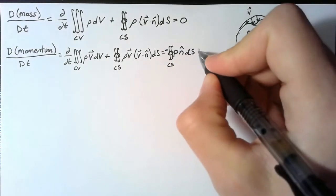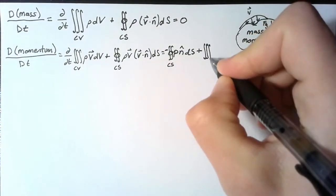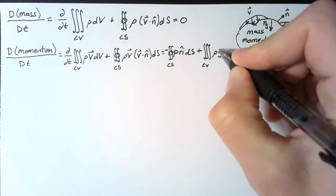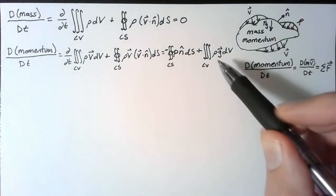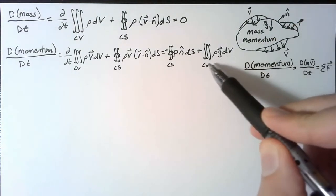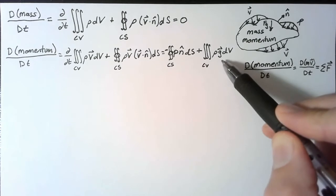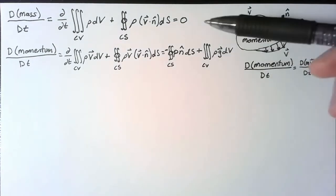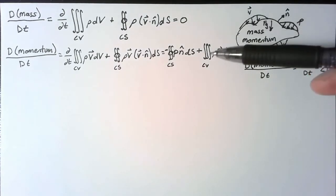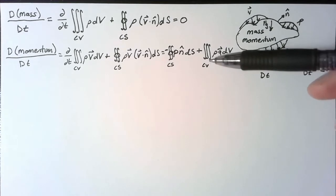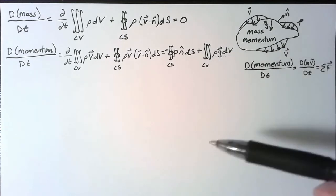And then we need to multiply this by an area, so we have a ds. The force of gravity is just the integral over the entire volume of rho times g dv. But in this case g is constant, so this is really just mass times g. So now we've written both the conservation of mass and the conservation of momentum from a control volume standpoint.